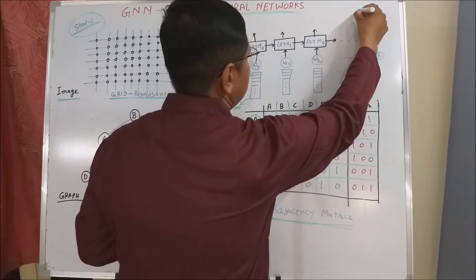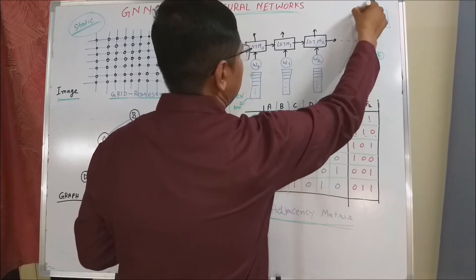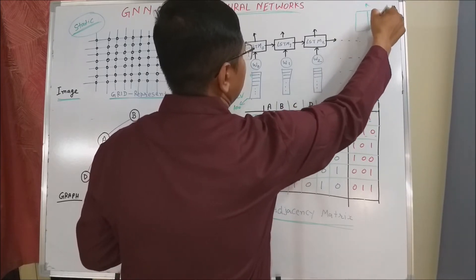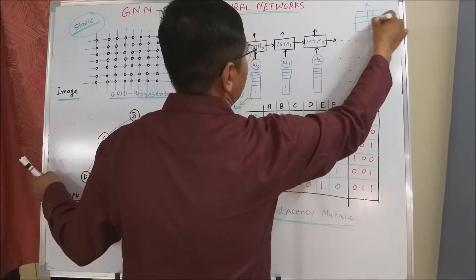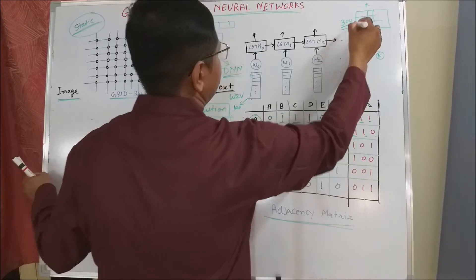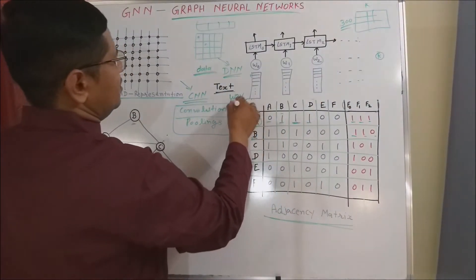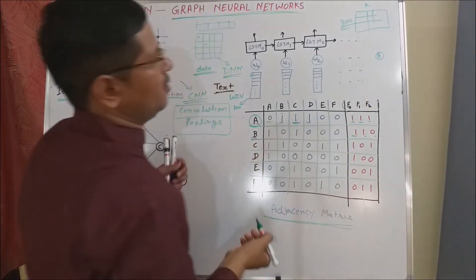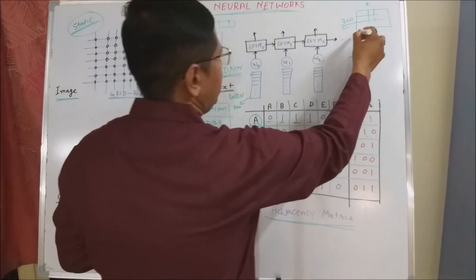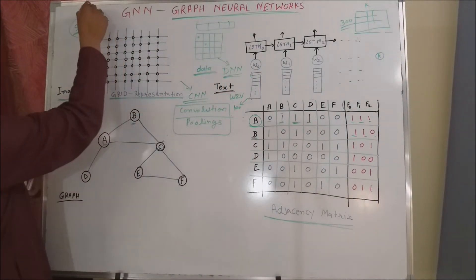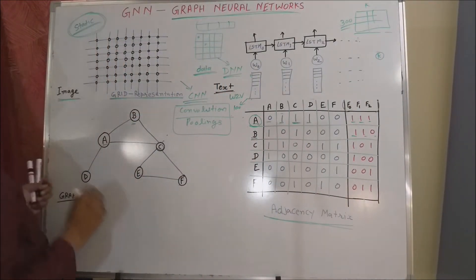This converts, again, this converts your data into a matrix with K number of columns and suppose you are using 300 dimensions of embedding. Again, it is in the form of matrix. And again, the representation, the major feature of this representation is it is static.